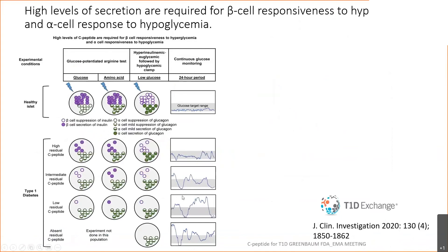This data was put together in a graphic abstract, serving to emphasize that a healthy islet has normal physiological responses resulting in normal glucose tolerance ranges. But as you have less and less C-peptide, you will have wider excursions and higher glucose levels, reflected by abnormalities in response to glucose or arginine in terms of beta cell or alpha cell response. Similarly, an abnormal response to hypoglycemia is clearly related to the amount of residual insulin secretion present.